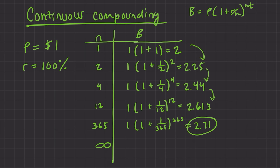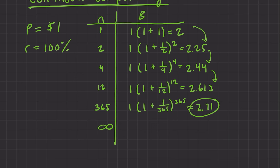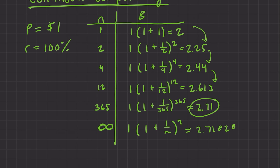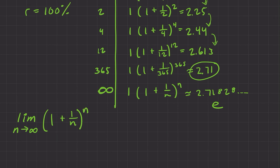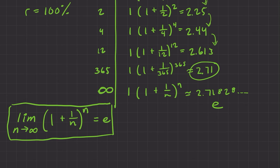That number is called e. It describes this relationship: if you take 1 times (1 + 1/n) to the n as n approaches infinity, we're not going to reach infinity — we approach it. That's going to be approximately 2.71828 — it keeps going. This is the number e. It's an irrational number, and we can formally capture this idea using the concept of a limit. The limit as n approaches infinity of (1 + 1/n) to the n equals e. This is the definition of e — it's a definition of growth, not geometric like pi.